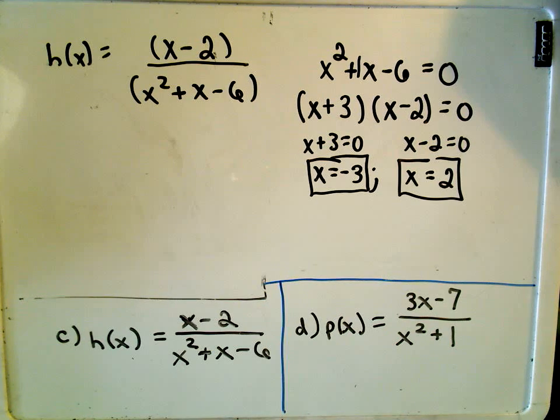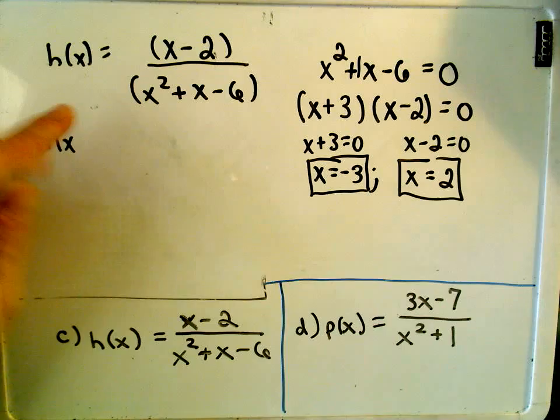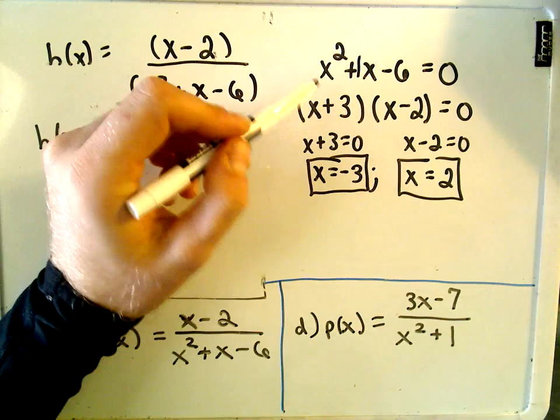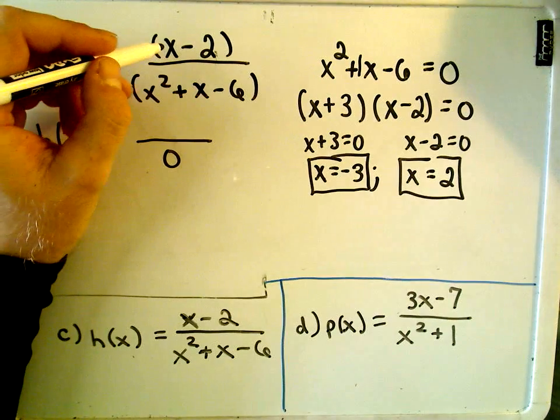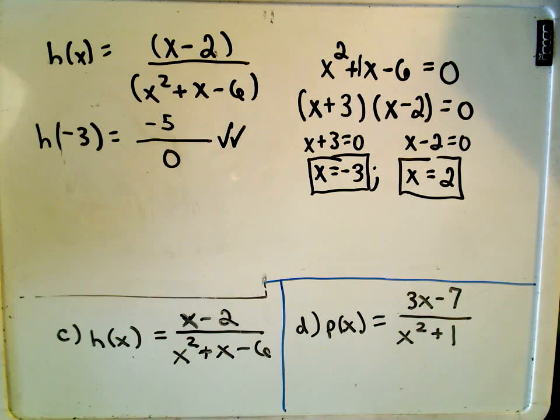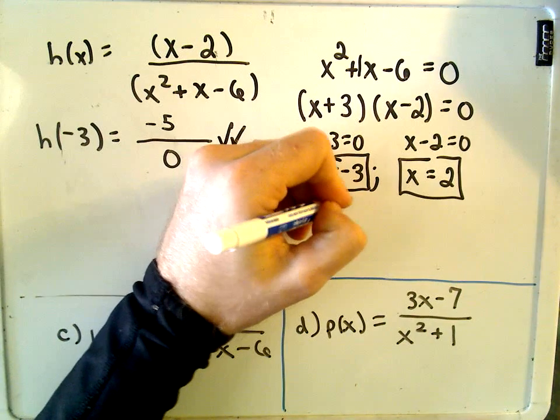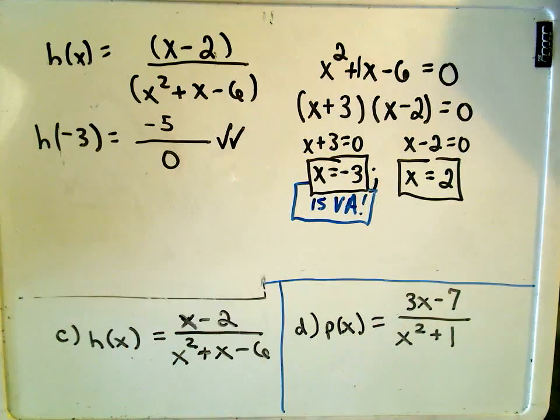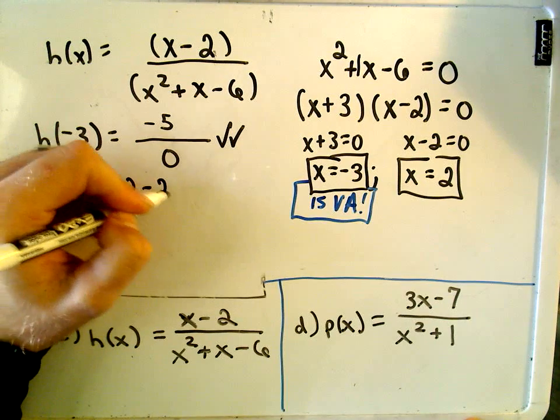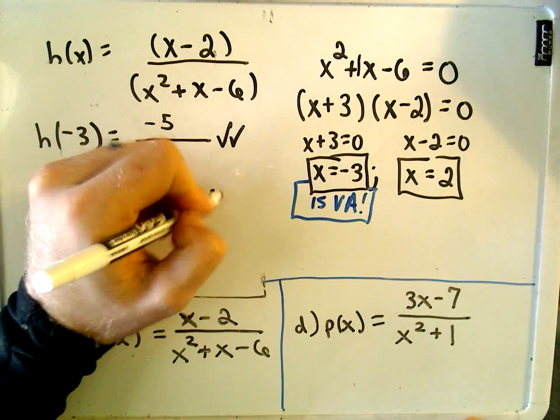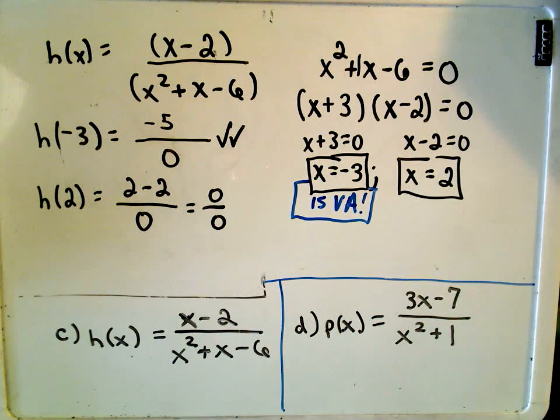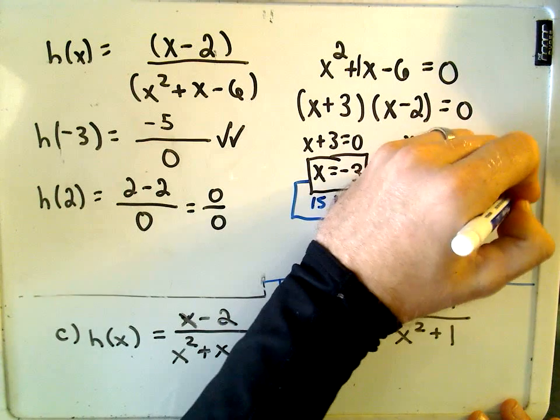Again, I need to check and plug each one in. Well, notice certainly if you plug in negative 3, well, on the bottom we said that gives you 0 out. That's what we just solved over there for. If you plug negative 3 into the top, you get negative 5 over 0. That's something non-0 over 0. So x equals negative 3 is a vertical asymptote. But notice for sure if you plug in 2 into our function, well, then we get 2 minus 2. Again, we know for sure it gives you 0 on the bottom. That's what we just figured out. Well, here you get 0 over 0. So that means the line associated with x equals 2 is not a vertical asymptote.